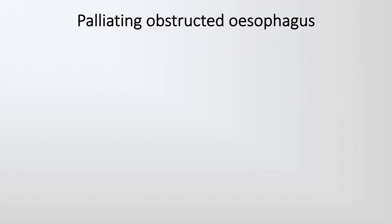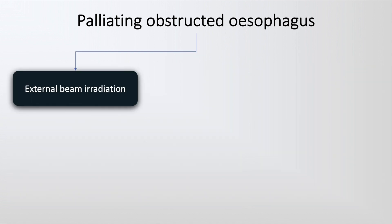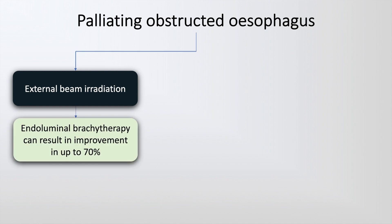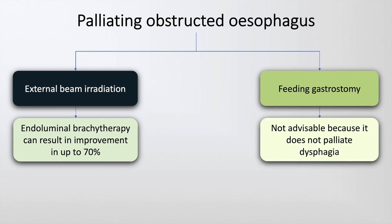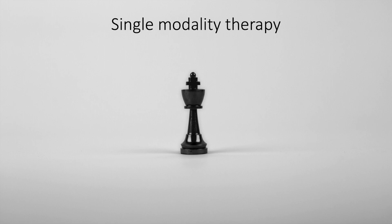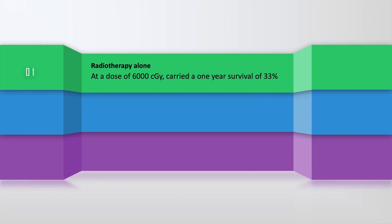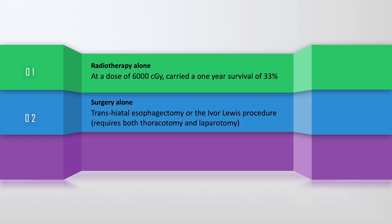Palliation of the obstructed esophagus may also be done with external beam irradiation, and up to 70% of patients will experience improvement. A feeding gastrostomy does not palliate dysphagia and is generally not advisable. Single modality therapy consists of radiotherapy alone at a dose of 6000 centigray, carrying a survival of 33% at one year, or surgery alone — the transhiatal esophagectomy or the Ivor-Lewis procedure, which requires both thoracotomy and laparotomy.